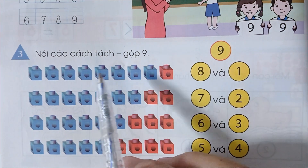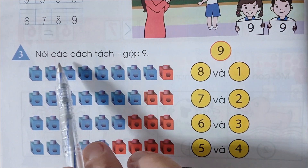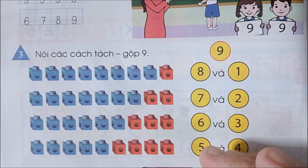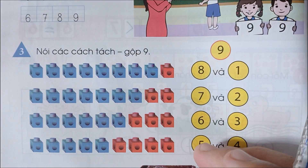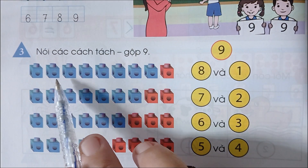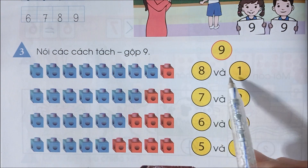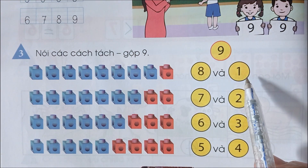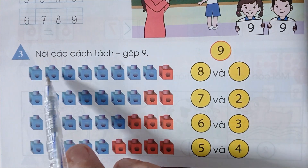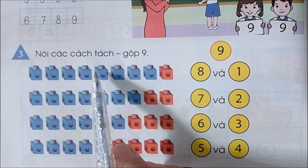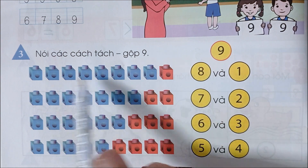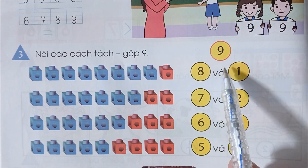Bài số 3. Nói các cách tách gộp 9. 9 gồm 8 và 1. Gộp 8 và 1 thành 9. 1, 2, 3, 4, 5, 6, 7, 8. 8 với 1 gộp lại thành 9.